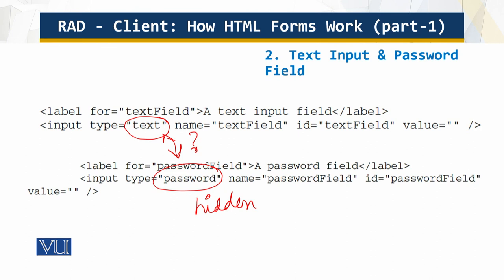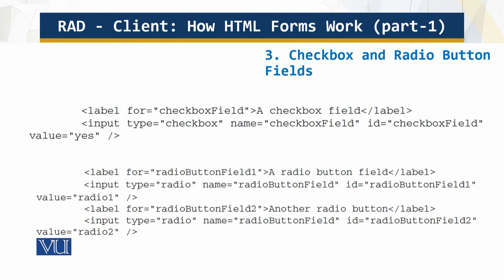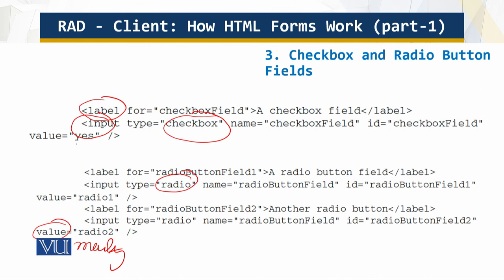Now let's look at checkboxes and radio buttons. You have the label and the input, and you can add attributes to the checkboxes. You can have groups of at least two radio buttons. Importantly, the value attribute is mandatory for both checkboxes and radio buttons — this is what makes them different from the text box and other fields.